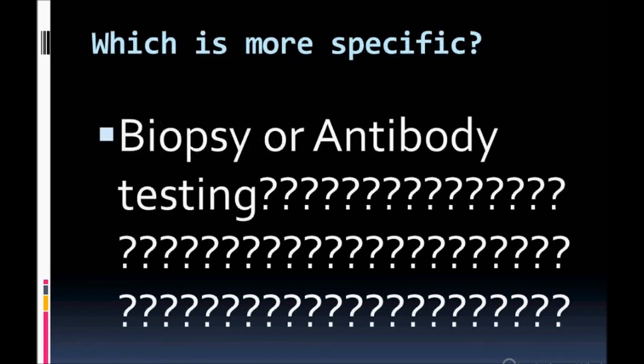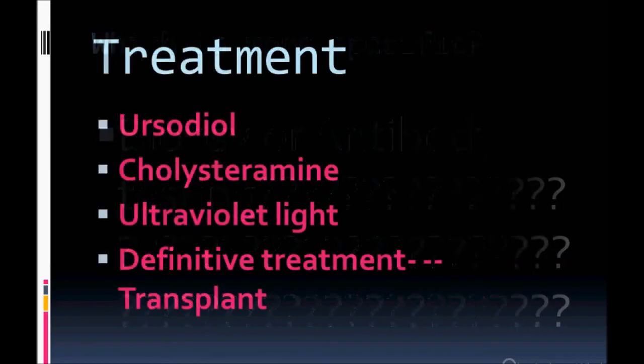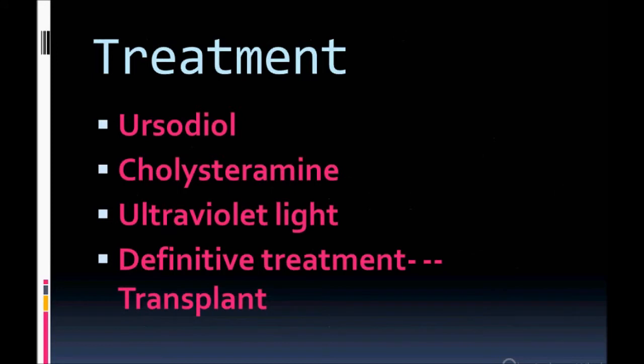Which is more specific — the biopsy or antibody testing? The biopsy is the most specific test. What is the treatment? The same treatment as in primary sclerosing cholangitis: UDCA, which is ursodeoxycholic acid. It inhibits absorption of cholesterol from the intestine.